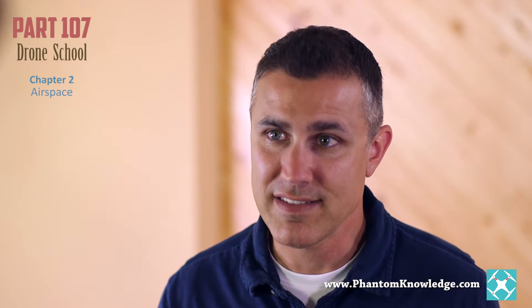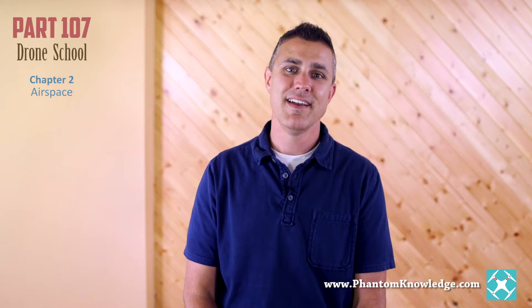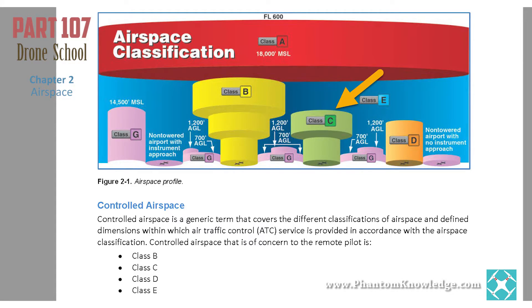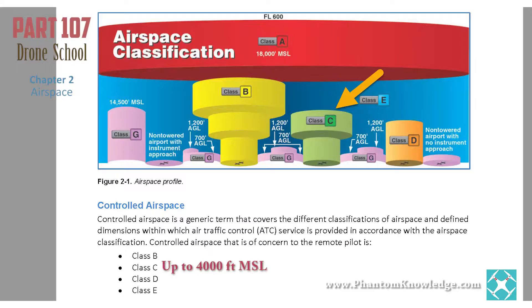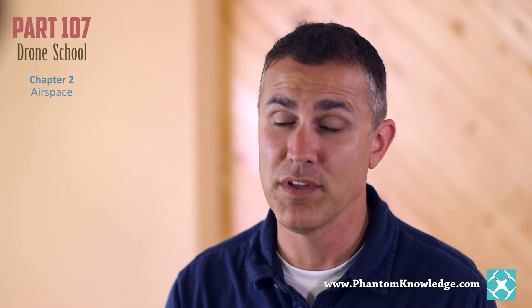So that covers Class A and Class B, so you can probably guess that Class C is what's going to come next. Class C airspace is like Class B's little brother. It surrounds airports which have a control tower and radar approach control, so again, manned pilots may be flying IFR and unable to look for you. Class C is a two-tiered, upside-down wedding cake, with the center column typically extending from the ground up to 4,000 feet MSL, and then the outer, wider tier extending from 1,200 feet up to 4,000 feet. Again, remote pilots must obtain permission before entering Class C airspace.